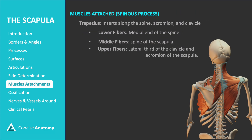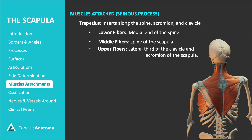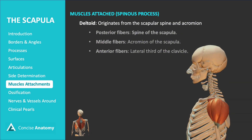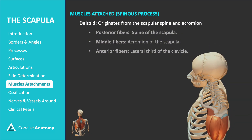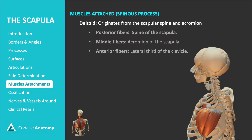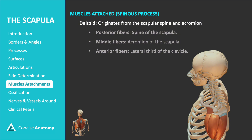Two important muscles attach to the spine of the scapula: the trapezius and the deltoid. The lower fibers of the trapezius attach to the medial end of the spine of the scapula, assisting in depression and upward rotation. The middle fibers attach to the spine of the scapula, primarily responsible for retracting the scapula towards the spine. The upper fibers insert into the lateral third of the clavicle and the acromion. The deltoid is a large triangular muscle covering the shoulder joint, responsible for a wide range of arm movements — primarily shoulder abduction via the middle fibers, while the anterior fibers assist in flexion and internal rotation, and the posterior fibers contribute to extension and external rotation.